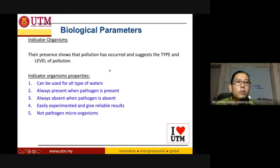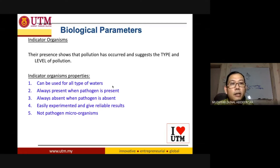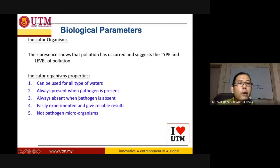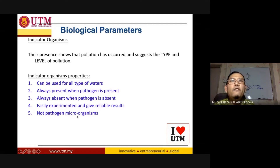Indicator microorganisms have already-mentioned properties. They can be used for all types of water, whether river water, well water, or lake water. Whenever you see an indicator microorganism, it means pathogens are also present. They are always present when pathogens are present, and always absent when pathogens are absent. They are easily tested and give reliable results because they are abundant in nature, though they themselves are not pathogenic.